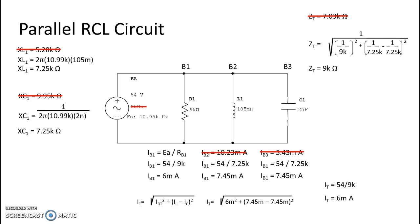You're canceling each other out and then all you have left is the current through your resistor. Squared and square rooted, it is total current of 6 milliamps.